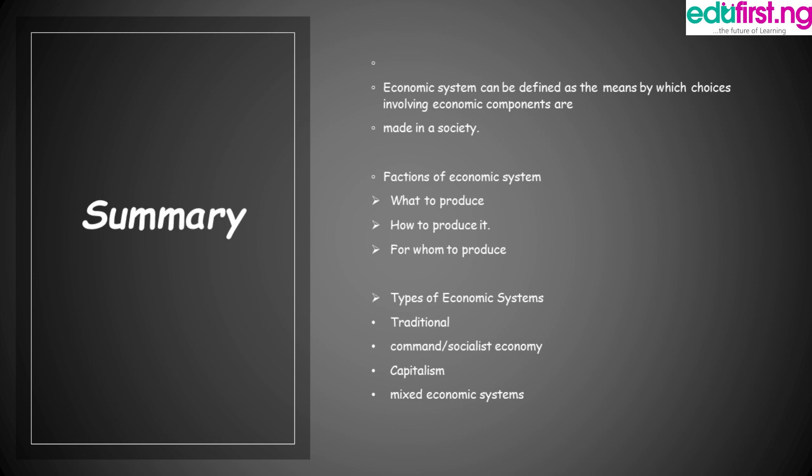So far, what have we considered? We have been able to establish the definition of an economic system. We have also considered the functions of an economic system — what to produce, how to produce, and for whom to produce. We have also established the types of economic system: traditional economic system, command or socialist economic system, capitalist economic system, and mixed economic system.